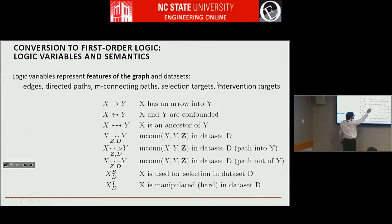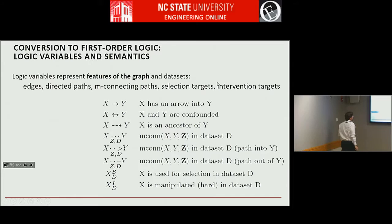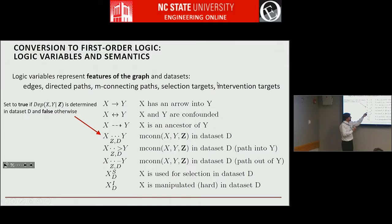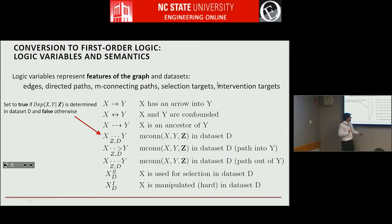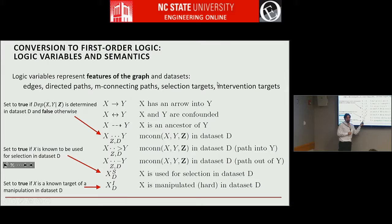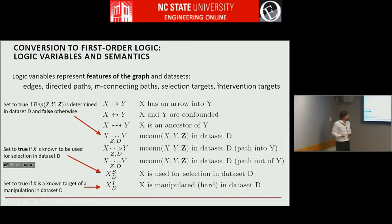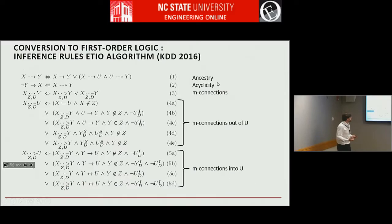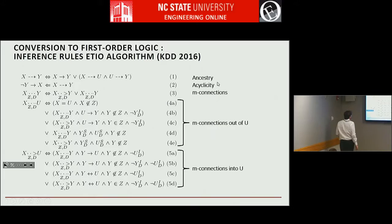What we do in the algorithm is define a bunch of propositional variables: the variable that in the unknown sought-after graph X is directly causing Y, or X and Y have a latent confounder, and auxiliary variables like whether X and Y have a directed path. There is also a variable that denotes that X and Y given Z are M-connected in data set D. You set a bunch of these things to true or false based on your data, selection bias information, and intervention information, and then we impose the constraints in a logic program.